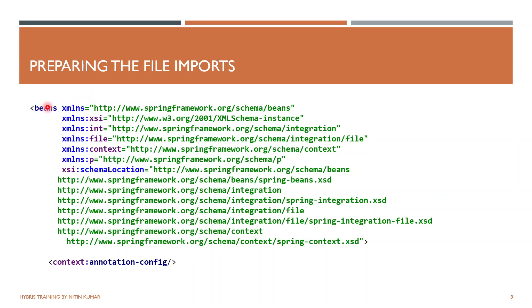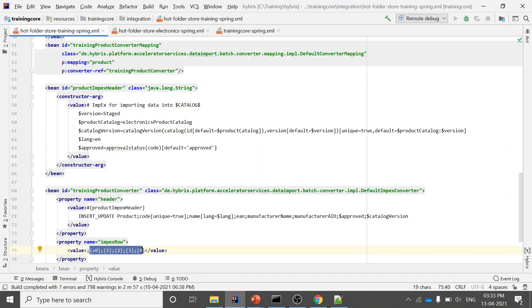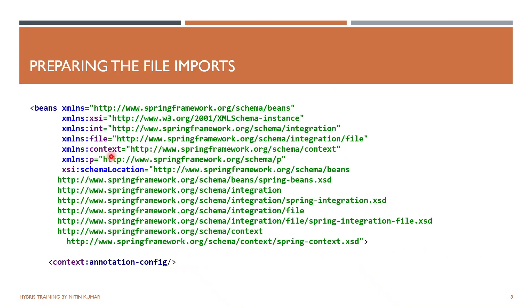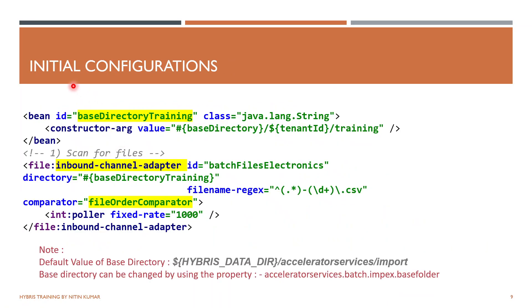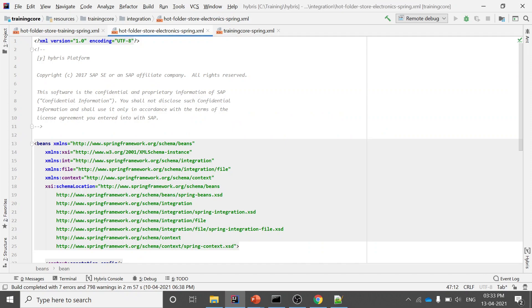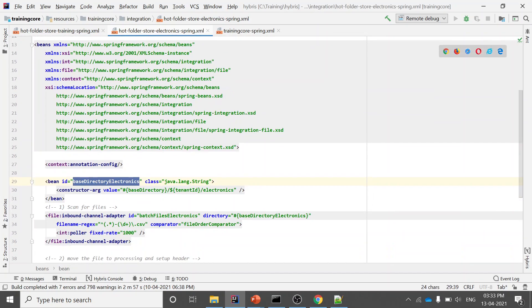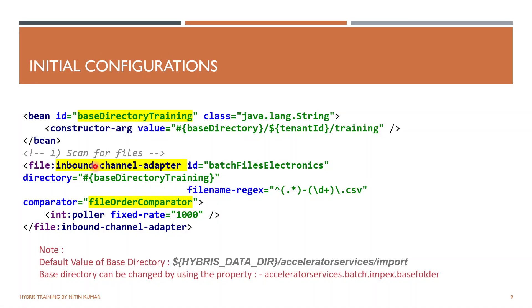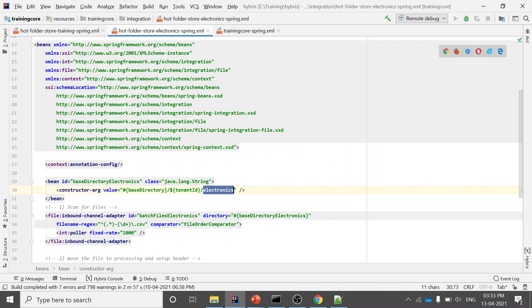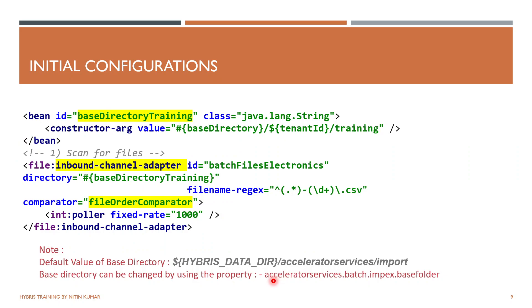The first step was preparing the file imports — I copied this from the existing out-of-box file. Next was creating the base directory ID, also available out of the box — I just changed the name and location. You can also change this location via a property file. The property is: accelerator.services.batch.impex.base.folder — whatever directory you give here will serve as your base directory.